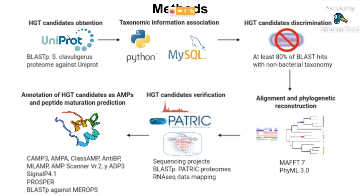With respect to the methods, first we obtained HGT candidates through BLAST searches of the S. clavuligerus proteins against the UniProt database. Next, we retrieved the taxonomy of each BLAST hit using custom Python scripts and a MySQL database, and the S. clavuligerus proteins with at least 80% of BLAST hits with a taxonomic classification different from bacteria were selected as HGT candidates. We then performed a global alignment with the BLAST hit candidates using MAFFT and reconstructed a phylogenetic tree using PhyML. We manually analyzed the tree topology to establish an HGT pattern. To avoid obtaining HGT candidates due to contamination in the S. clavuligerus genome project, we verified these sequences in different sequencing projects.